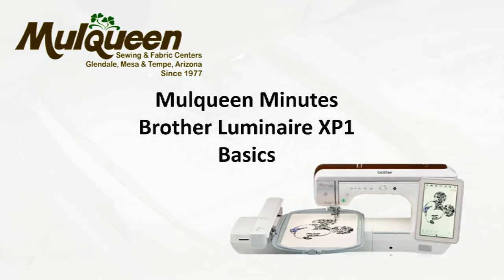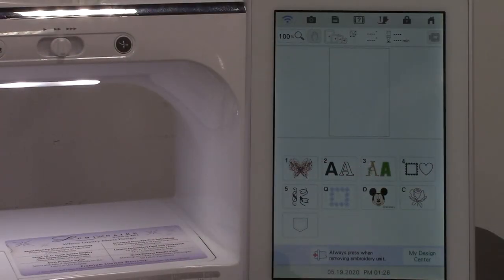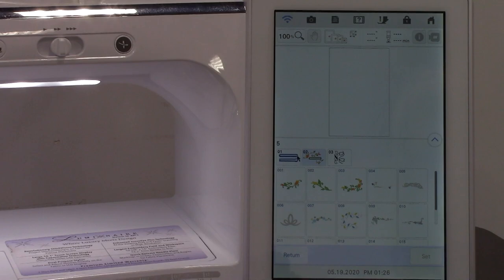Today we're going to work with our border function. The border function is category number five and in category number five I'm going to go to folder two. Folder two looks like it's just decorations to put around a buttonhole, but you can use these elements for anything you like. I'm going to take 07, it's a very small design, and say set.